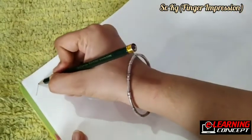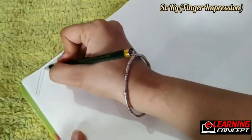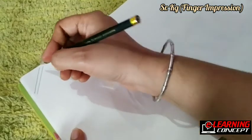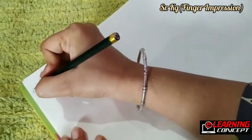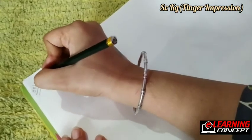First of all, open your book, open the page. Here, write the date: 0, 8, 0, 7.